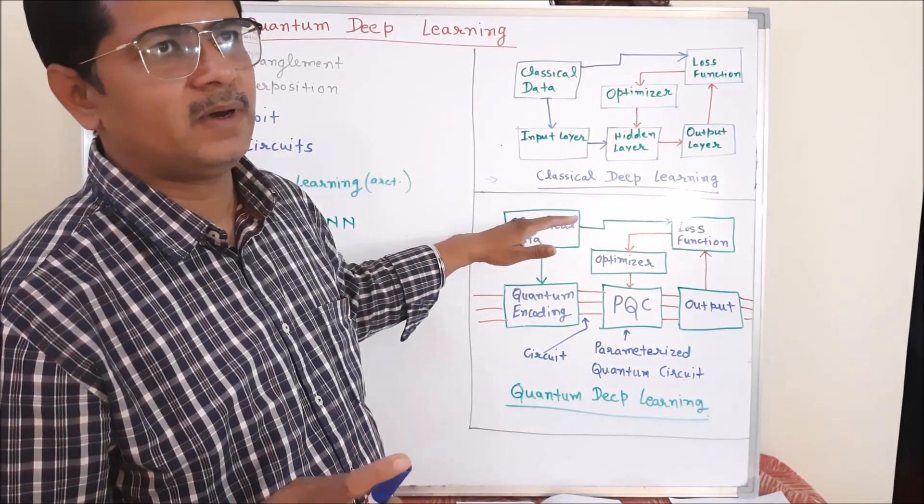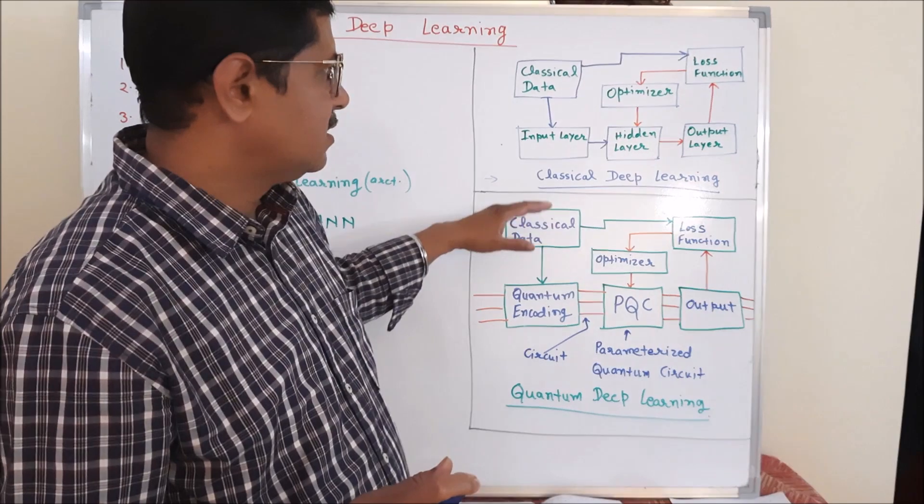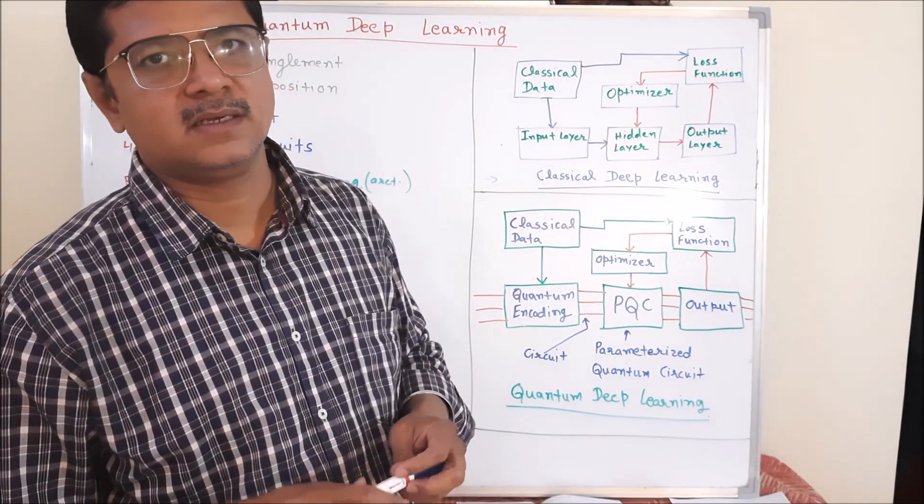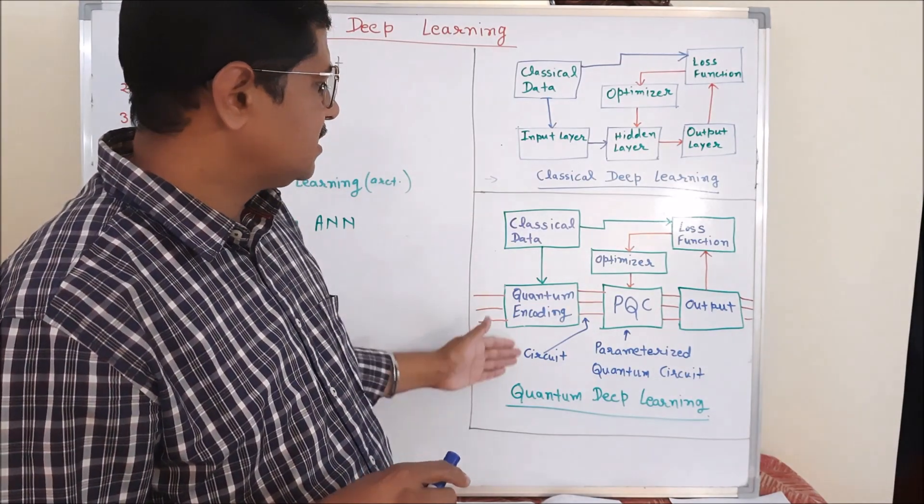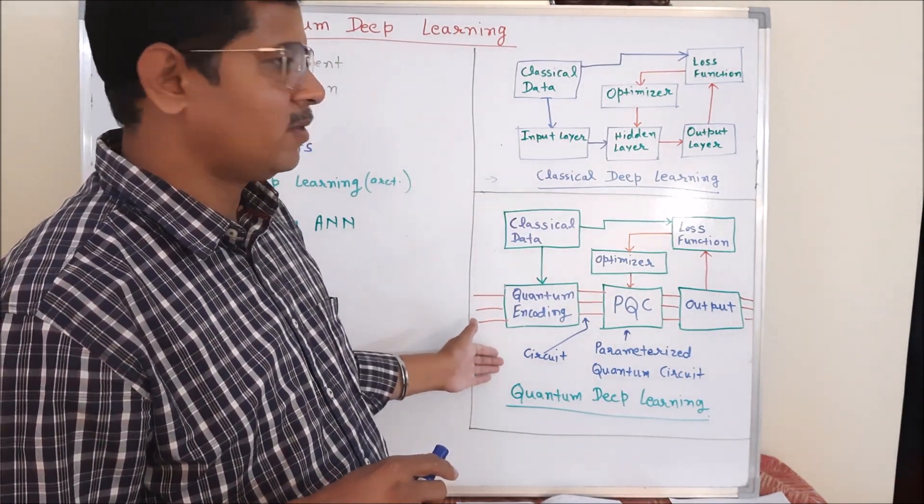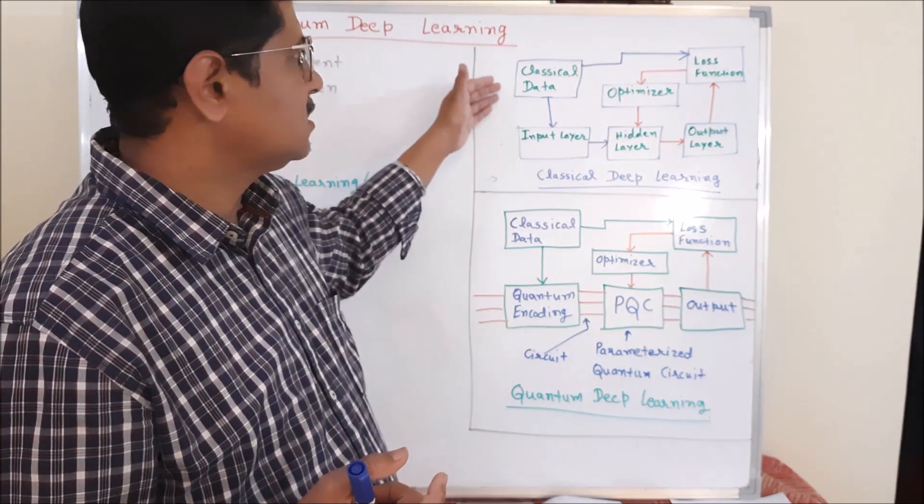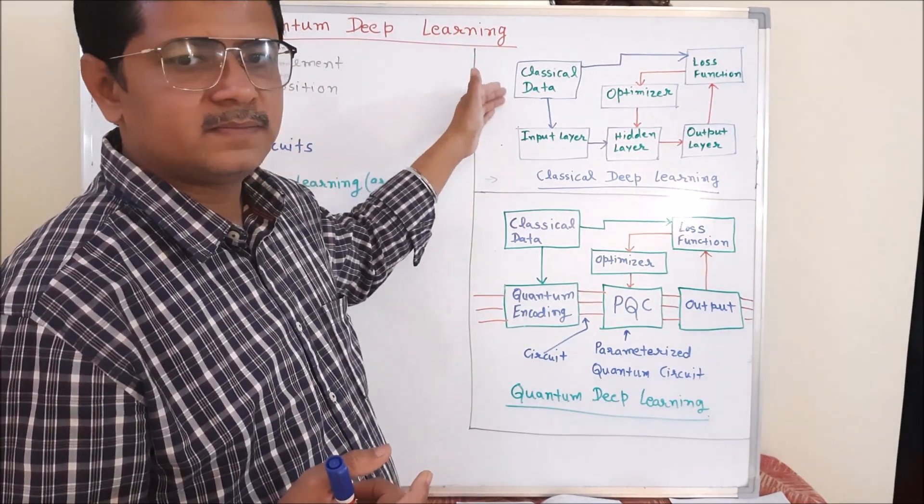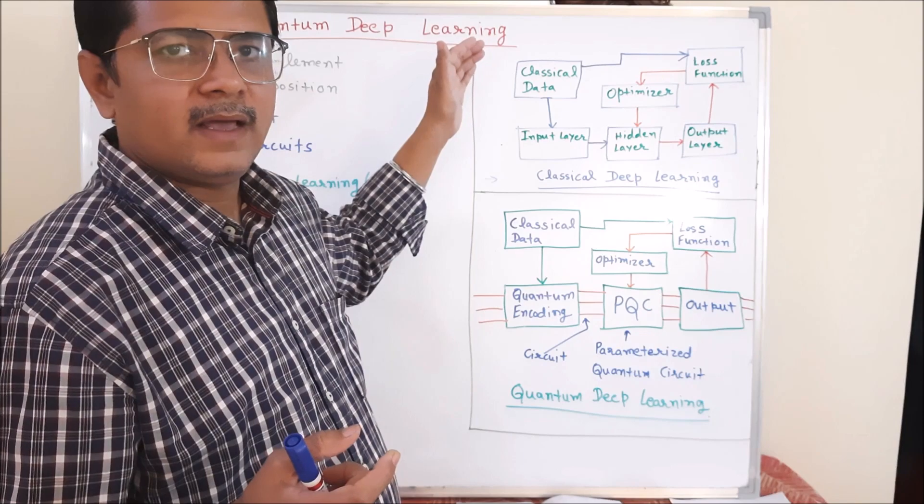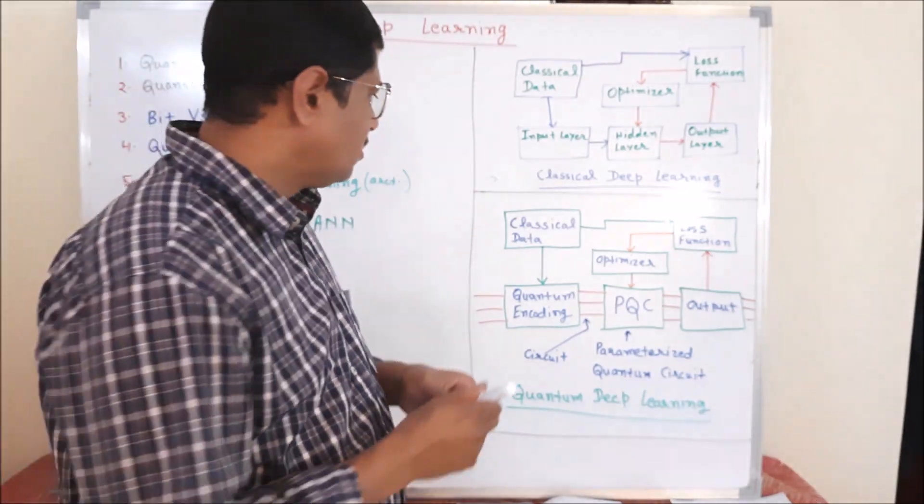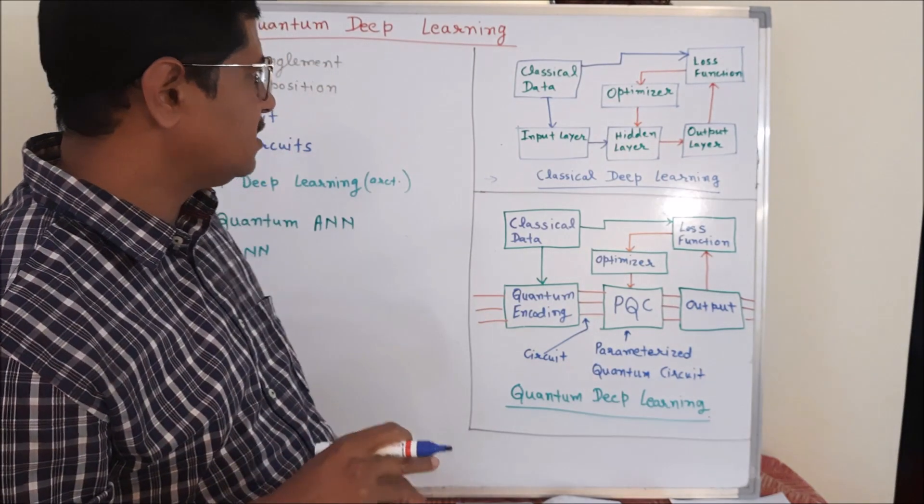Once we have a proper quantum computation system, I think it will totally replace the classical deep learning architectures. Because we can solve a lot of problems in polynomial time or real time, that is not possible through classical deep learning due to its bit-based architecture. So let us go into the details.